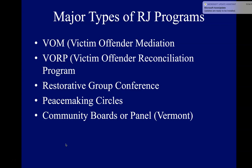The Victim Offender Reconciliation Program, or VORP, has been used in war-torn countries, states, and cities. Next, the Restorative Group Conferencing Model. This was introduced in the U.S. in 1994 and came from Australia.